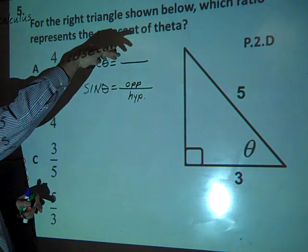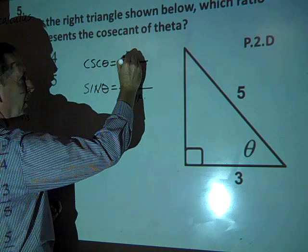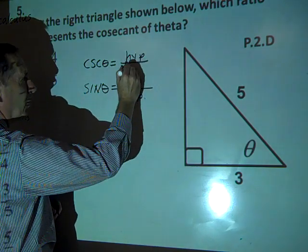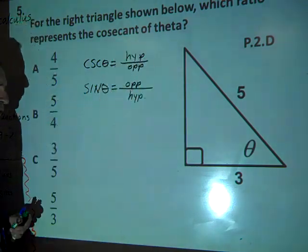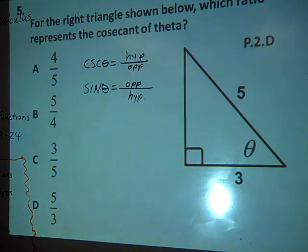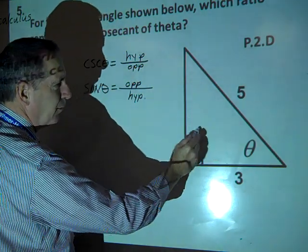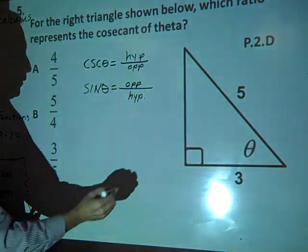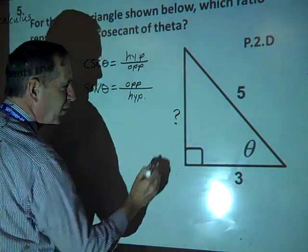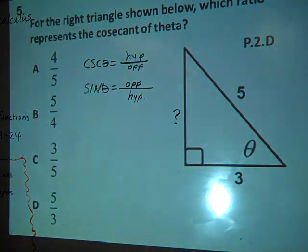And cosecant is just going to be the reciprocal, right? So we have hypotenuse over opposite. Now, do we have an opposite here? No, we do not. And so in order to solve this one, we really need to find out what that opposite side is, don't we? And how would we do that? Pythagorean theorem.